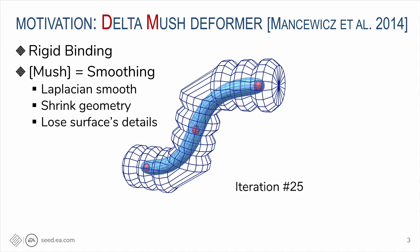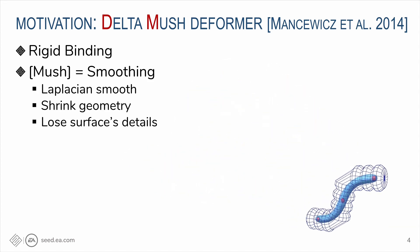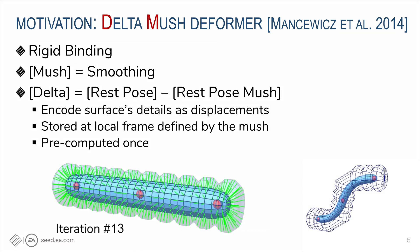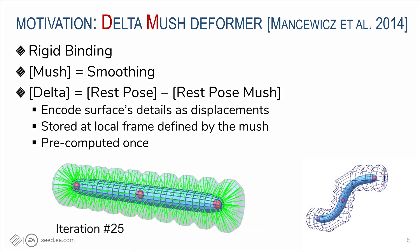Smoothing fixes broken geometry, but it shrinks the mesh and blurs all details. To recover the details, we compute Delta. It's the difference in the rest pose between the original geometry and the smooth version stored in the local coordinate frame. Those are green lines in this figure. And note that we only need to compute Delta once per model, but not at runtime.